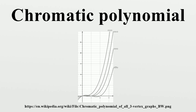No graph can be zero-colored, so zero is always a chromatic root. Only edgeless graphs can be one-colored, so one is a chromatic root for every graph with at least one edge. On the other hand, except for these two points, no graph can have a chromatic root at a real number smaller than or equal to 32/27.